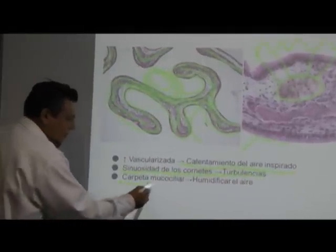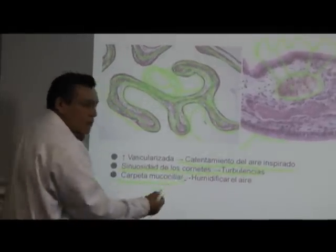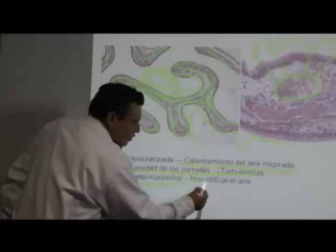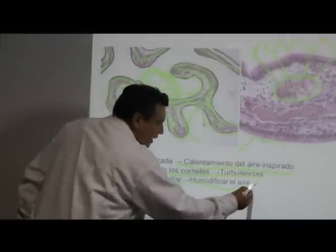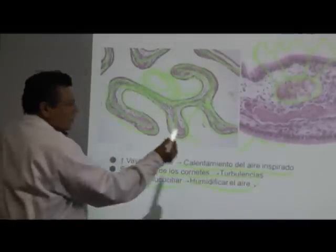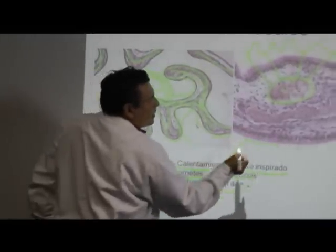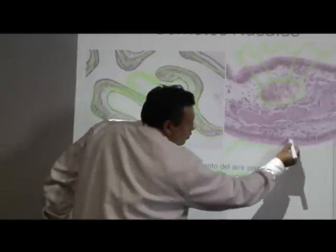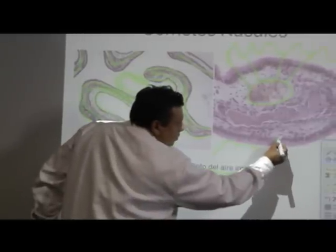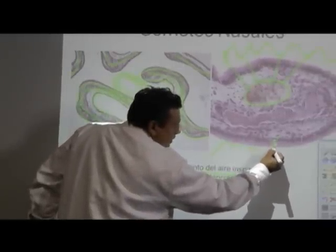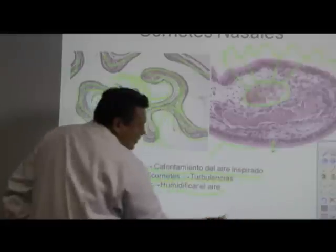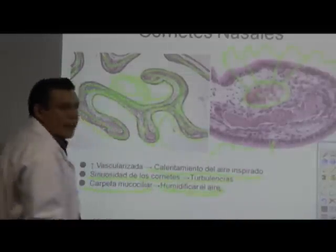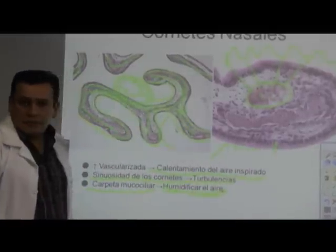Esta carpeta mucociliar no solamente va a eliminar las partículas, sino que entre ellas podemos ver células productoras de moco, llamadas células caliciformes, que van a humectar ese aire inspirado.